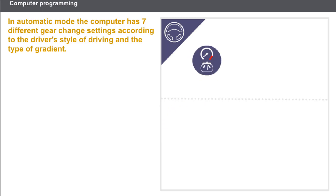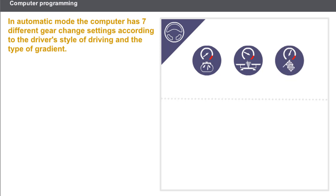The eco setting is for gentle driving on a level road and authorizes gear changes at low engine speeds. The medium setting is for slightly more lively driving on a level road, requiring gear changes at mid-range engine speeds. The sport mode is for higher performance, which needs gear changes at high engine speeds.